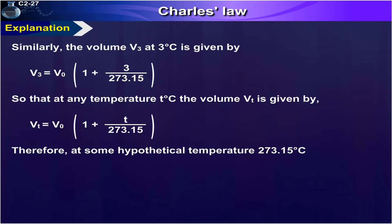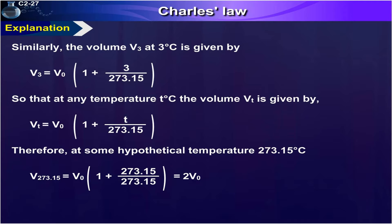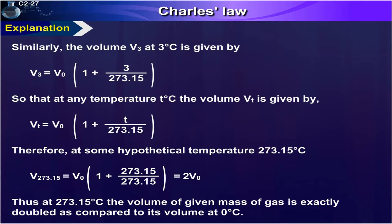Therefore, at some hypothetical temperature, Vₜ = V₀ × (1 + 273.15/273.15) = 2V₀. Thus, at 273.15 degrees Celsius, the volume of a given mass of gas is exactly doubled as compared to its volume at zero degrees Celsius.